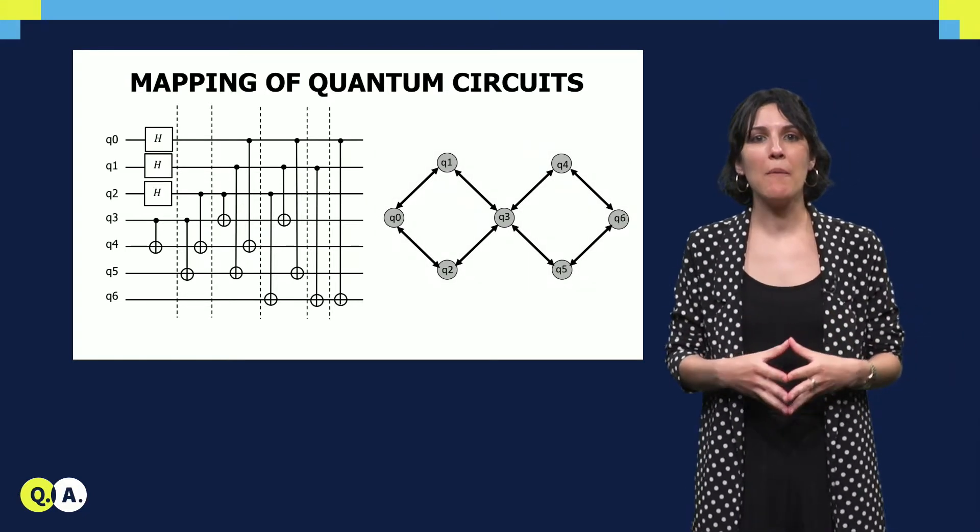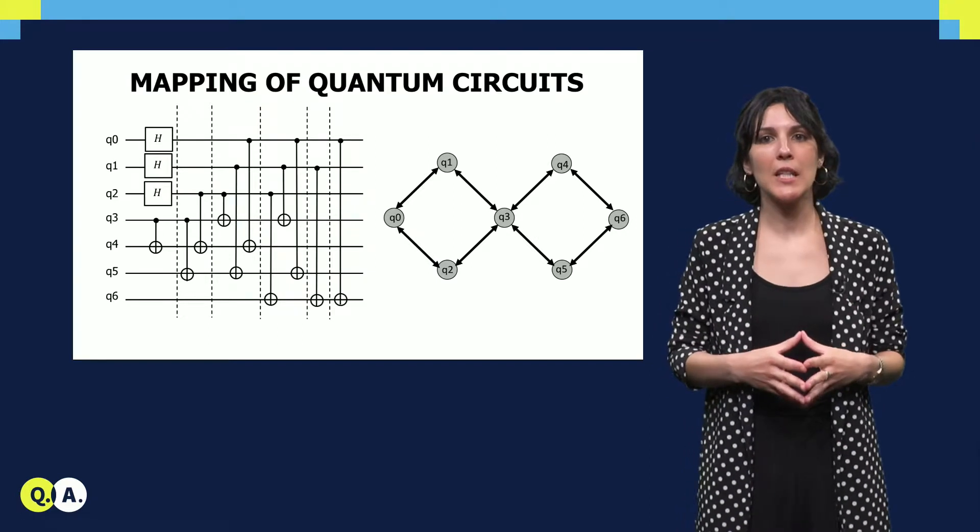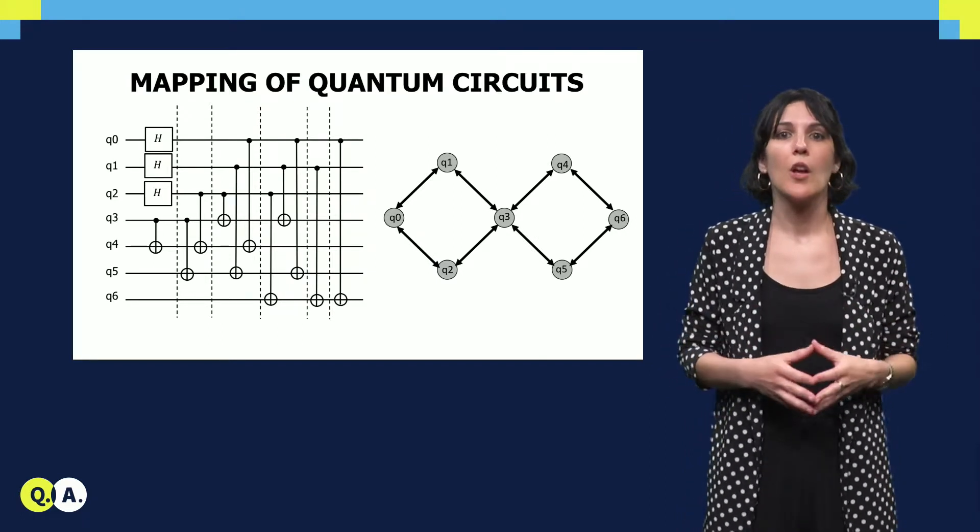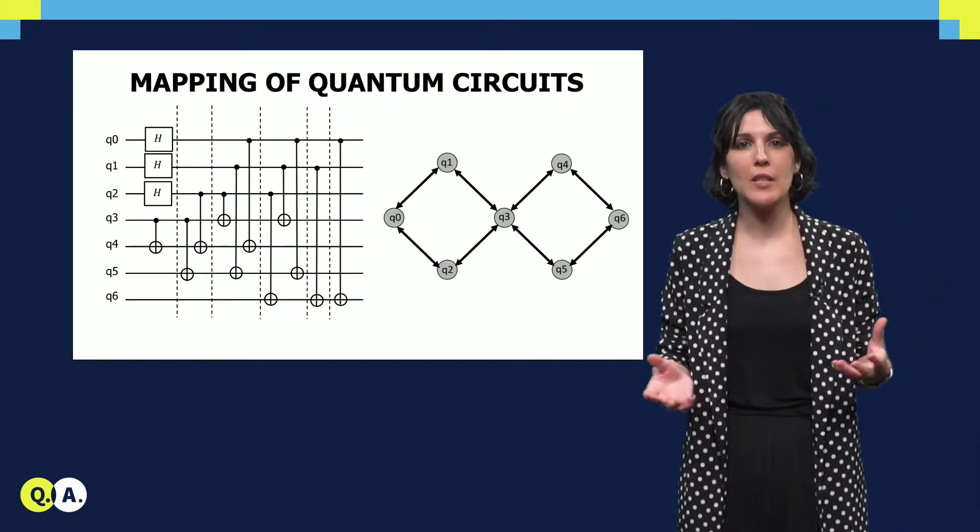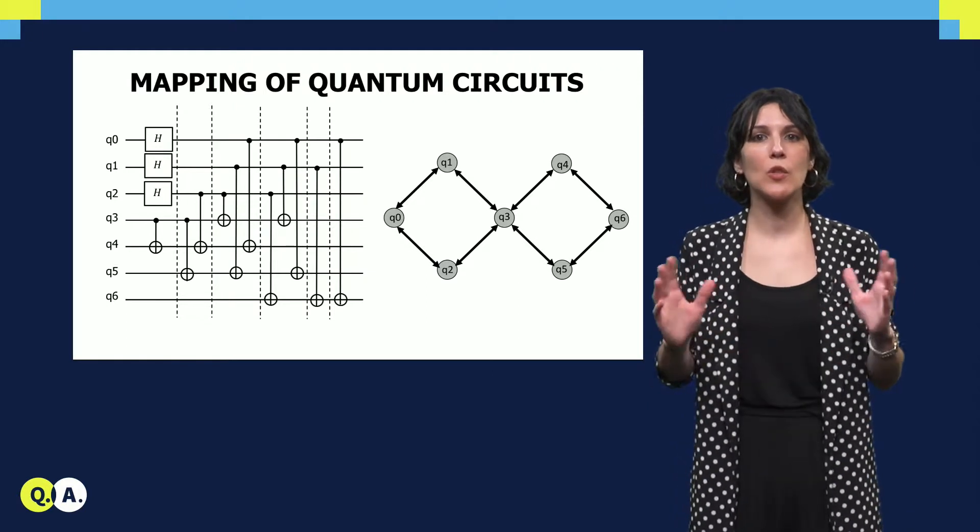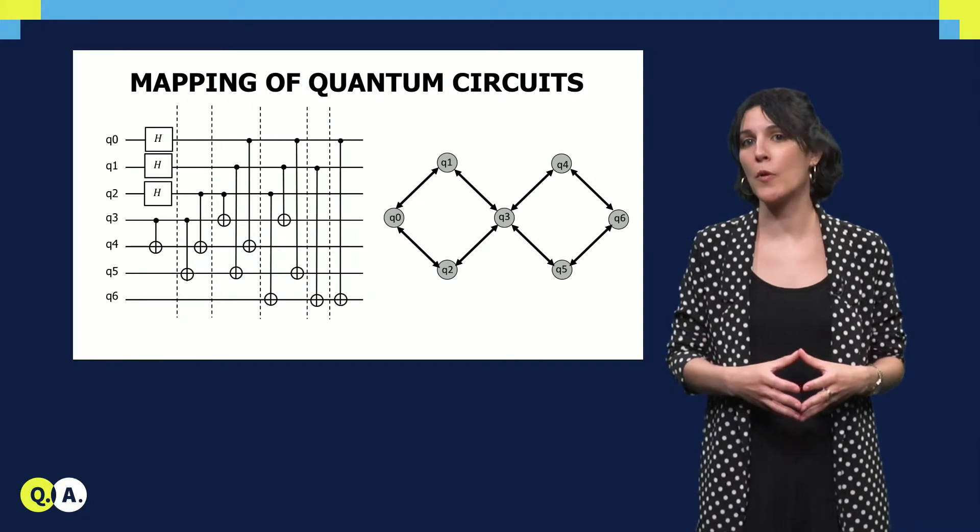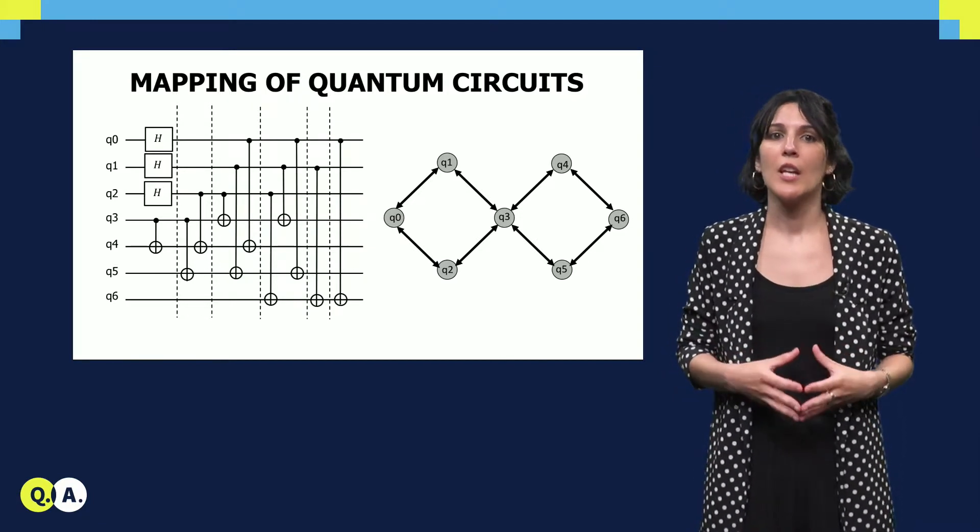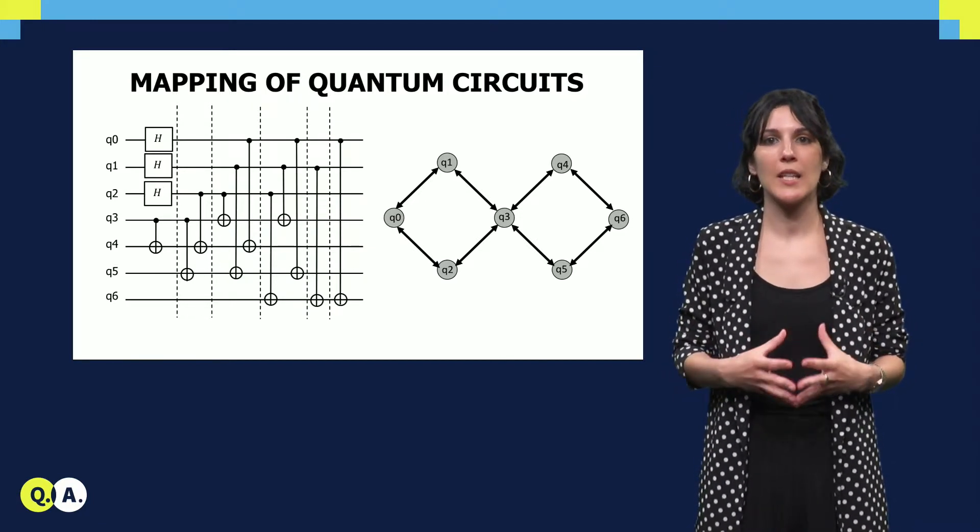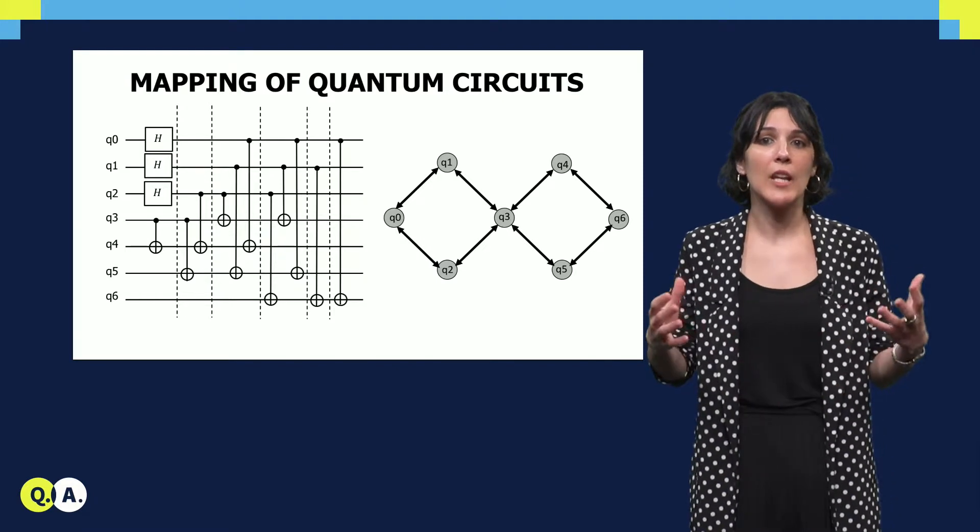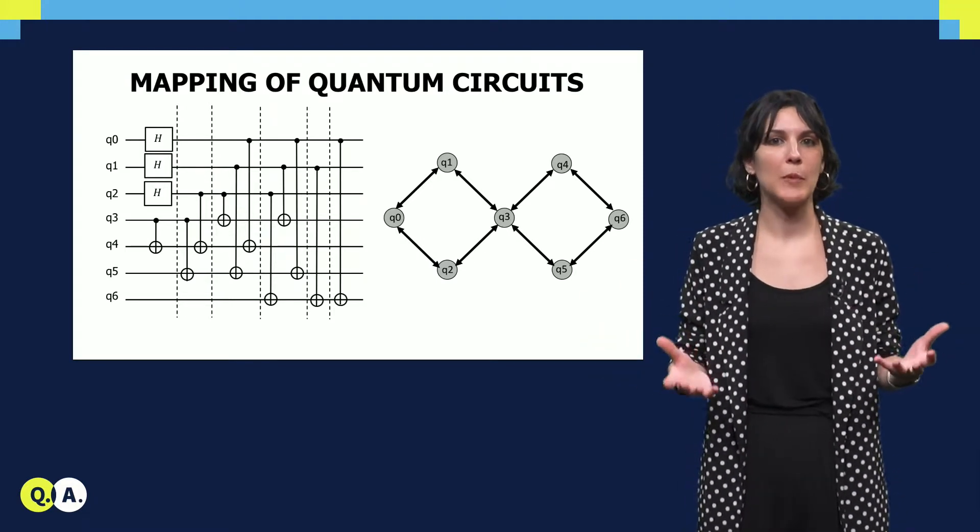For instance, we can map the virtual qubits to the physical ones in this way. One can try to place the qubits in a way that all connectivity constraints are satisfied and all the interactions between them are possible. However, it is not always possible to find such a placement in which all the constraints are satisfied from the beginning.